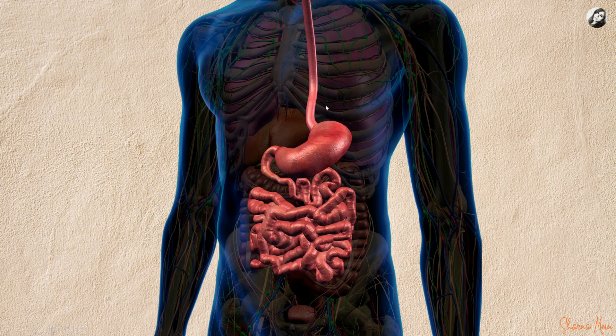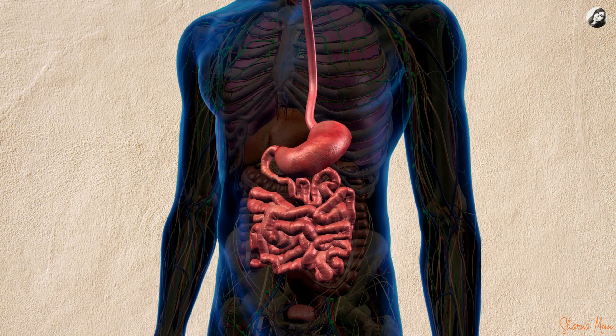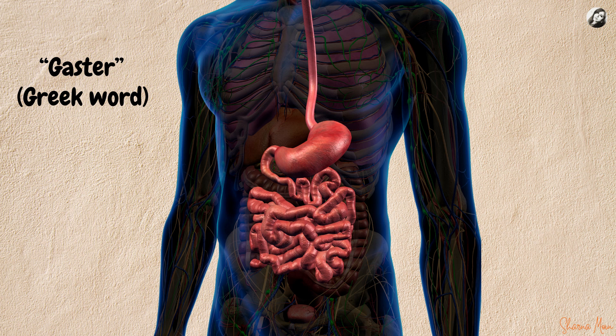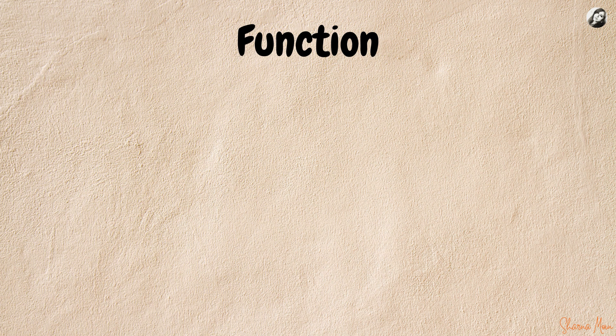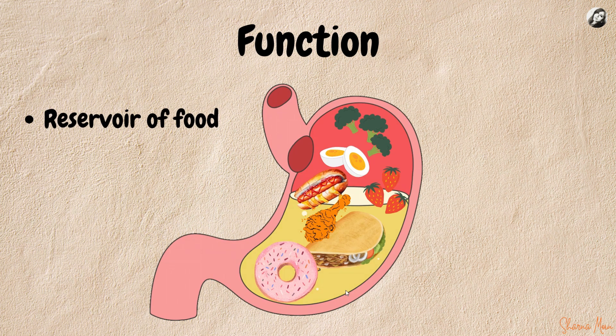The stomach is the most dilated part of the GI tract, which intervenes between the esophagus and the duodenum. The stomach is also called the 'gastro,' a Greek word which means the belly, which gives rise to the word 'gastric,' which is commonly used to describe structures associated with the stomach.